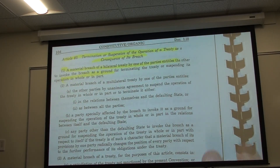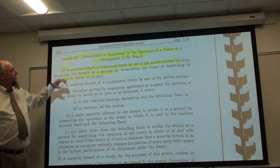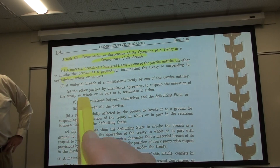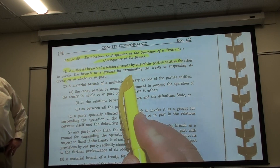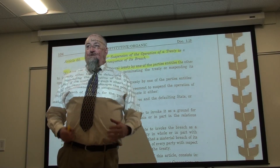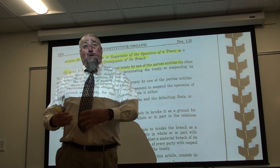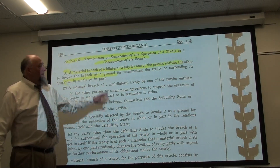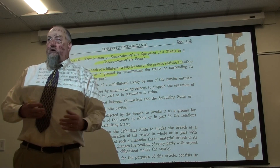Article 60 addresses termination or suspension of a treaty as a consequence of its breach. A material breach of a bilateral treaty by one party entitles the other to invoke the breach as grounds for terminating the treaty or suspending its operation. In other words, if you violate the contract, I can violate it as well. This allows a non-breaching state to go ahead and breach if there has already been a breach — a rule also found in domestic contract law.